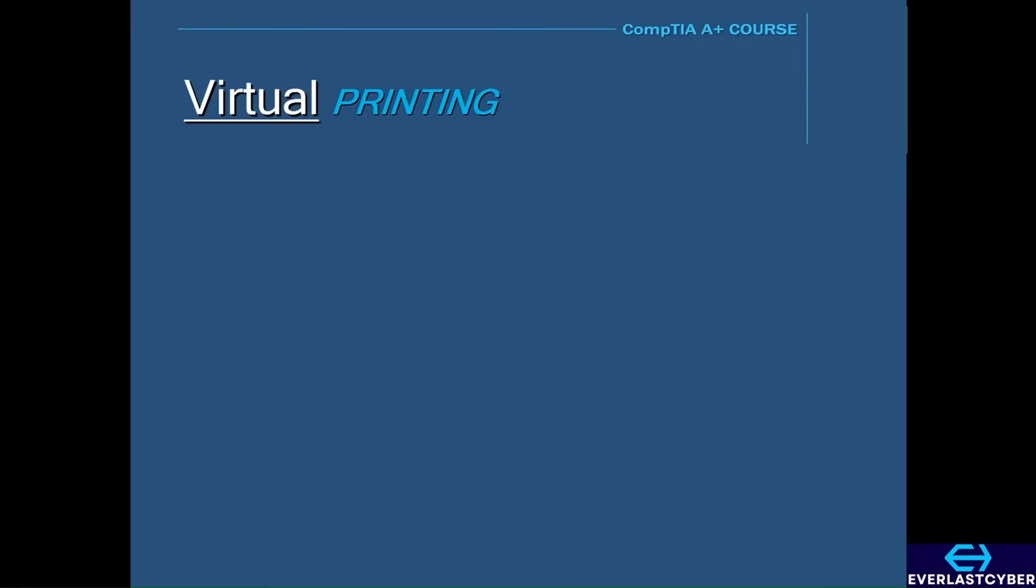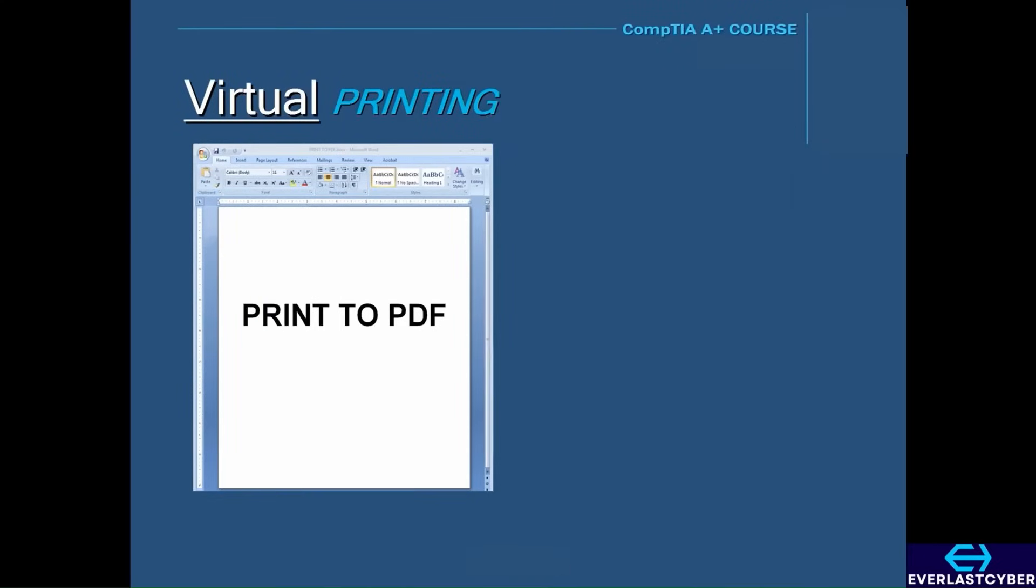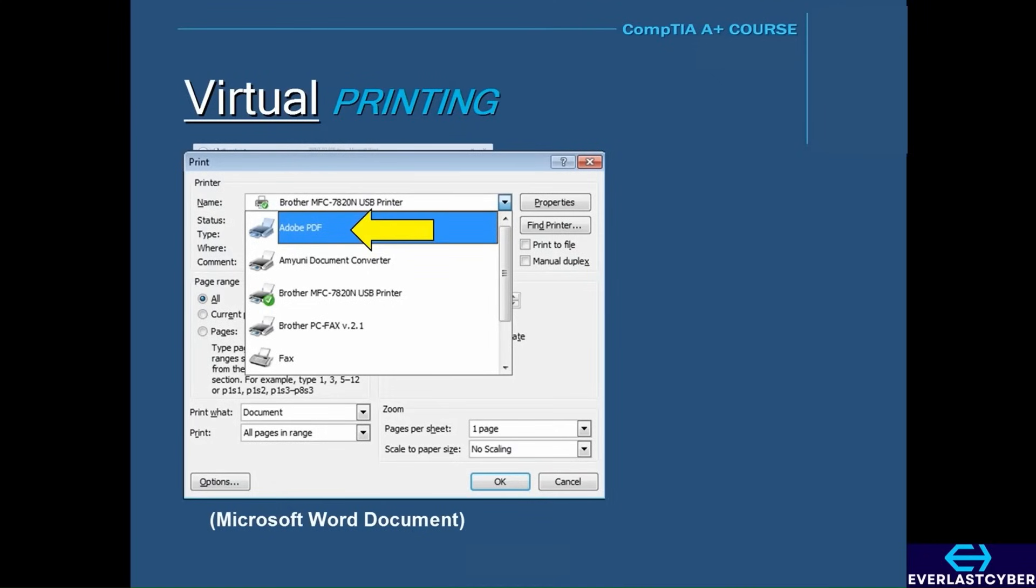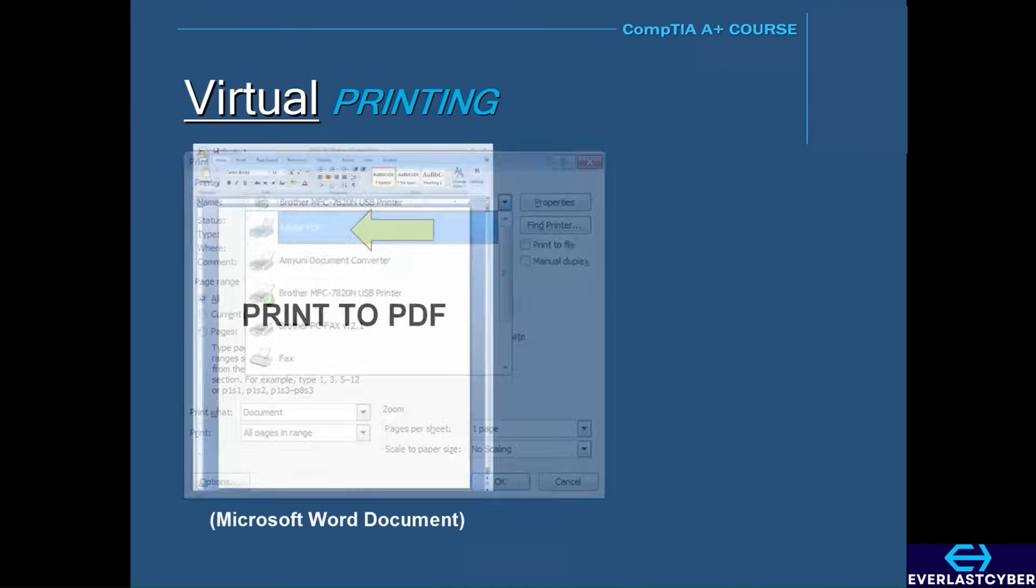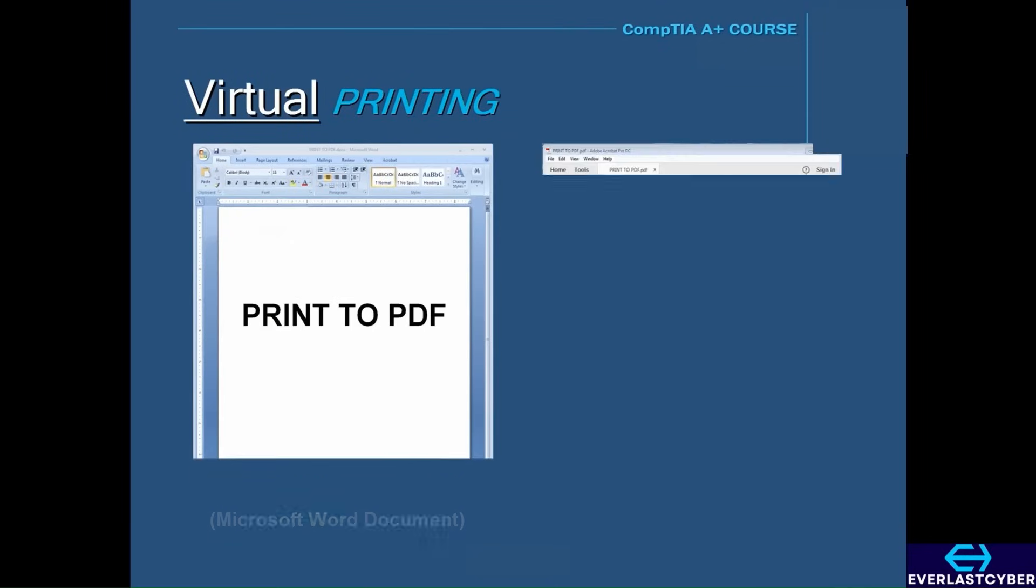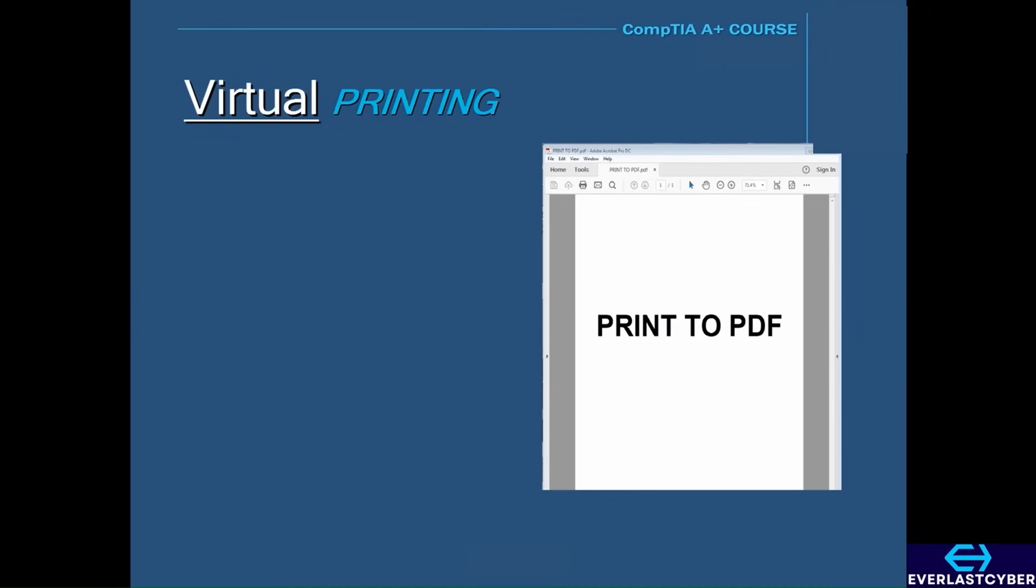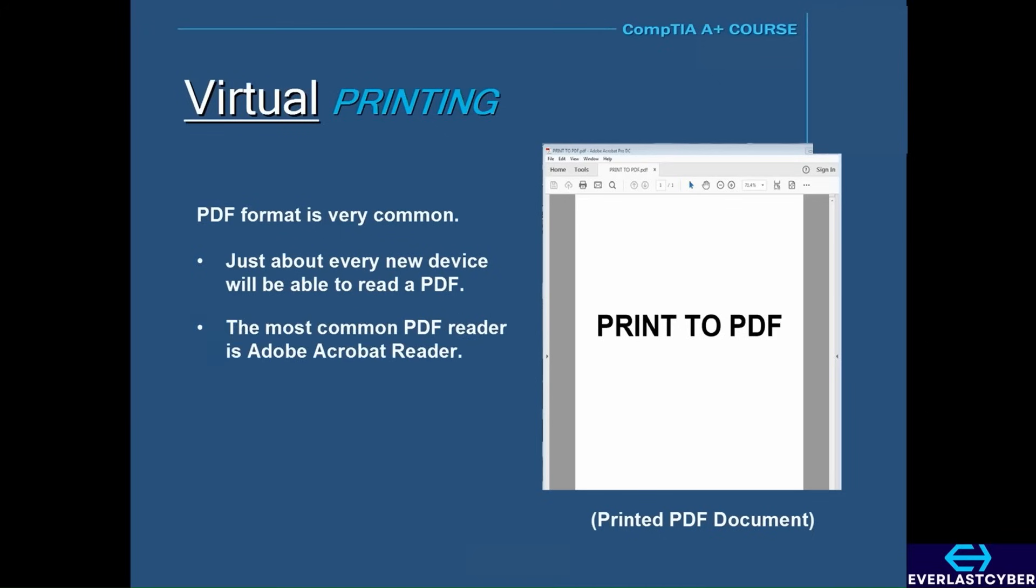Another form of virtual printing is called print to PDF. PDF stands for portable digital format. Printing a file to PDF prints a virtual document into a format that is universally readable across all devices, whether it is a PC, Mac, or smartphone. Once it's printed to a PDF, the file can be transferred to different devices, such as through email or a flash drive. And because the PDF format is so common, just about every new device on the market today will be able to read a PDF file without adding any additional software. The most common PDF reader is Adobe Acrobat Reader, which is available for download.